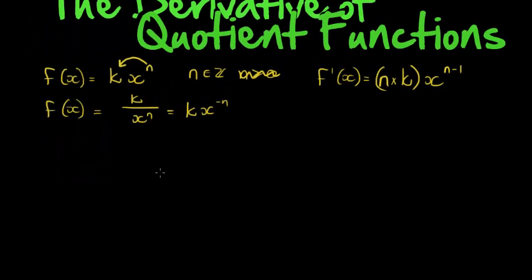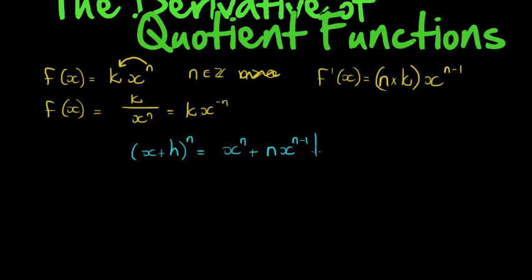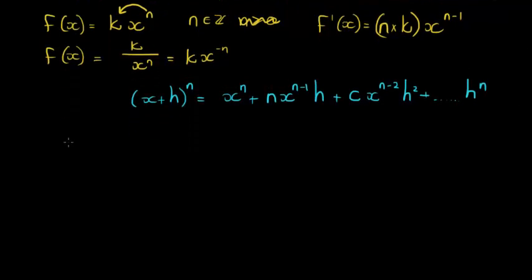Before we continue, let me remind you of something from the previous video: x plus h to the power of n equals x to the power of n, plus n times x to the power of n minus 1 times h, plus some constant times x to the power of n minus 2 times h squared, all the way up to h to the power of n as the last term.